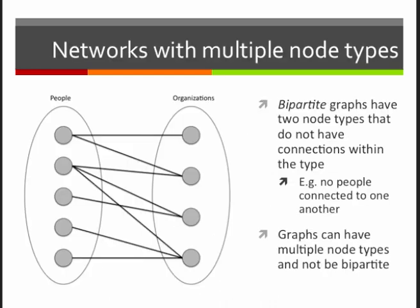So just to talk a little bit more about networks with multiple node types, there's a term for this called bipartite graphs. A bipartite graph is a network that has two types of nodes, and there's no connections between nodes of the same type. So for example, here we can see a bipartite graph that has people and organizations, but there's no links between people and no links between organizations. The only links go between people to organizations.